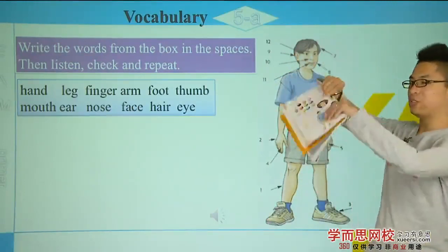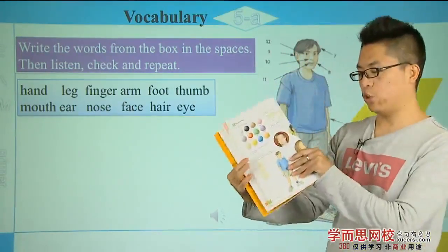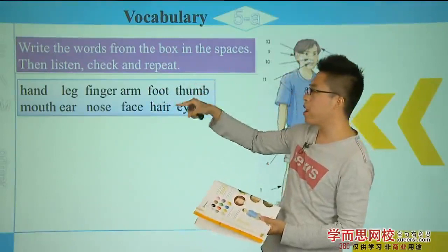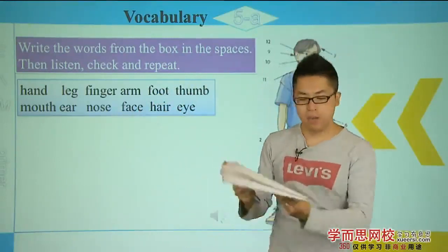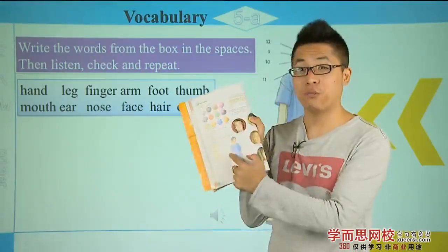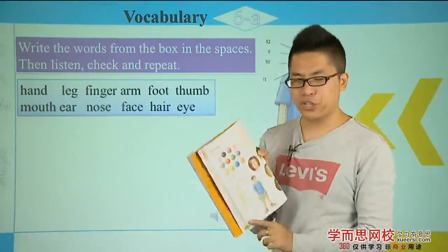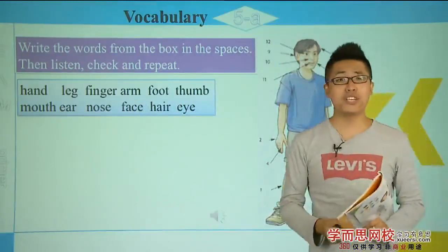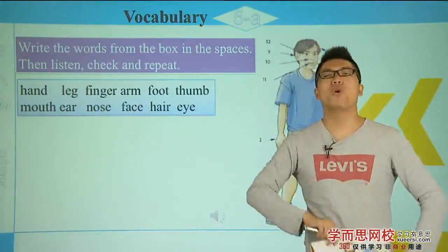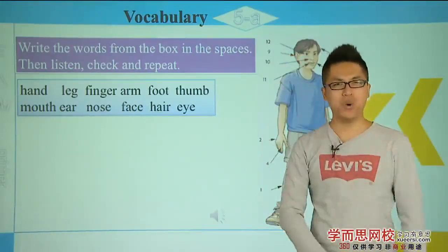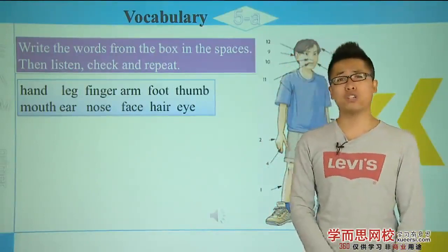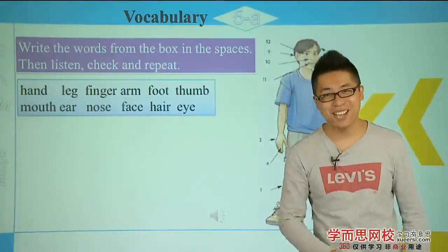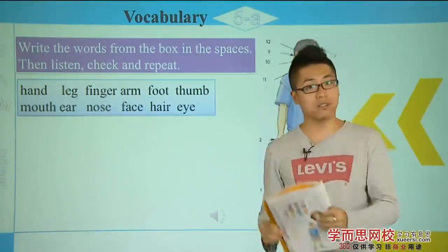I'll give you some time to finish this part. Turn to page 44 and write the words from the box: hand, leg, finger, arm, foot, thumb, mouth, ear, nose, face, hair, and eye. Write the words in the spaces from 1 to 12. You have one minute — but here I'll only give you ten seconds, then I'll say the answers. Please pause the video to finish this part.